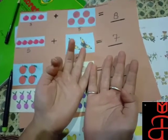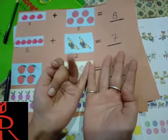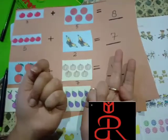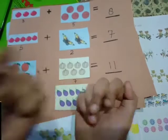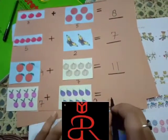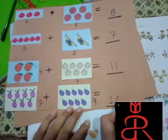Eight, nine, ten, eleven, twelve, thirteen, fourteen, fifteen, sixteen. It means seven plus nine is equal to sixteen.